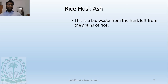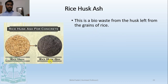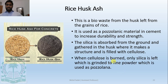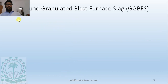Rice husk is a waste material left behind from the grain of rice. These husks are burned to produce rice husk ash, which is used as a pozzolanic material in cement to increase durability and strength. It contains silica — when the cellulose is burned, only silica remains, which is ground to a fine powder and used as a pozzolan.